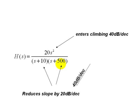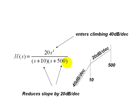It enters climbing up at 40 decibels per decade because of the double zero at zero. Then, at omega equals 10 radians per second, where the first pole is, the slope is reduced by 20 decibels per decade from 40 to 20. It keeps climbing all the way to the second pole at 500 radians per second, where the slope will be reduced again by 20 decibels per decade to a horizontal line. That is the shape of the plot.